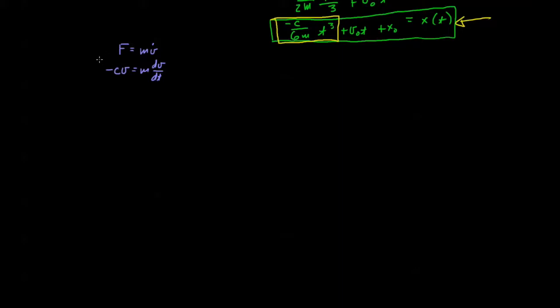Well hopefully you came up with this equation right here, negative cv equals m dv dt. Our next step is going to be to isolate the variables. So go ahead and put the video on pause and when we come back I'll have that step written down for us.